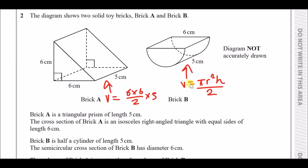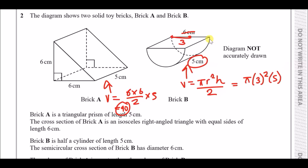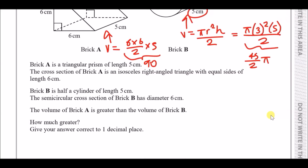The volume of brick A is 90 cm³. For brick B, the diameter is 6 so the radius is 3, and the height is 5, giving π × 3² × 5 ÷ 2 = 45π/2. Subtracting: 90 − 45π/2 on the calculator gives 19.3 cm³ to 1 decimal place. That's the difference in volume.